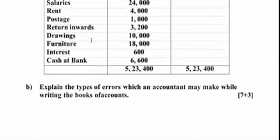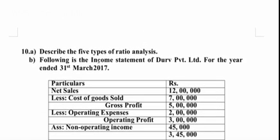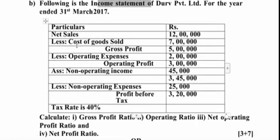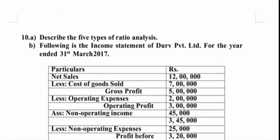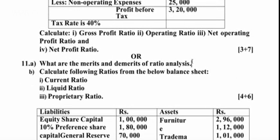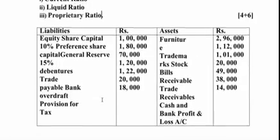For the fifth unit, the topic is ratio analysis. I have taken five types of ratio analysis followed by an income statement for the academic year 2017. Certain particulars are given and you need to calculate gross profit ratio, operating ratio, and all the different types of ratios. If you are preparing the fifth unit, you must work out the problems as well — failing which you risk picking this subject as a backlog. Other fifth unit topics include merits and demerits of ratio analysis and a problem related to current ratio, liquidity ratio, and proprietary ratio from a balance sheet. This is how your question paper will look in tomorrow's external examination.